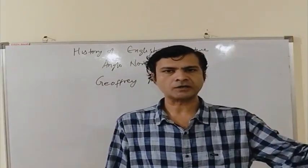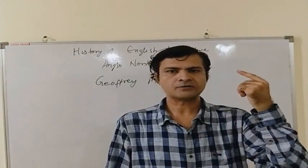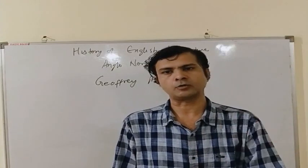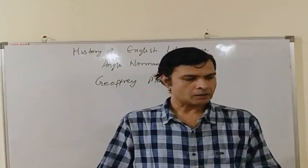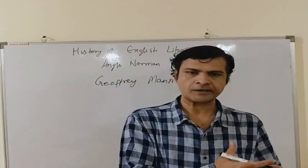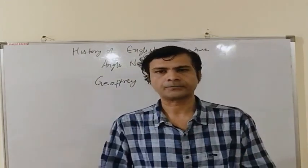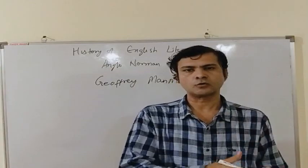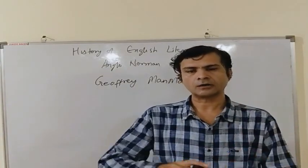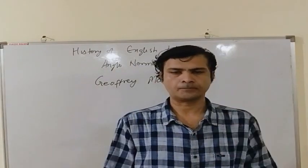Apart from these three famous poets of the Anglo-Norman period, there was one more poet whose name is not known. But his work is still popular, and in modern times it is popular because of the research and translations of J.R. Tolkien. We do not know his name, so we term him as the Pearl poet or the Gawain poet. This name is given because of the poems that he wrote.